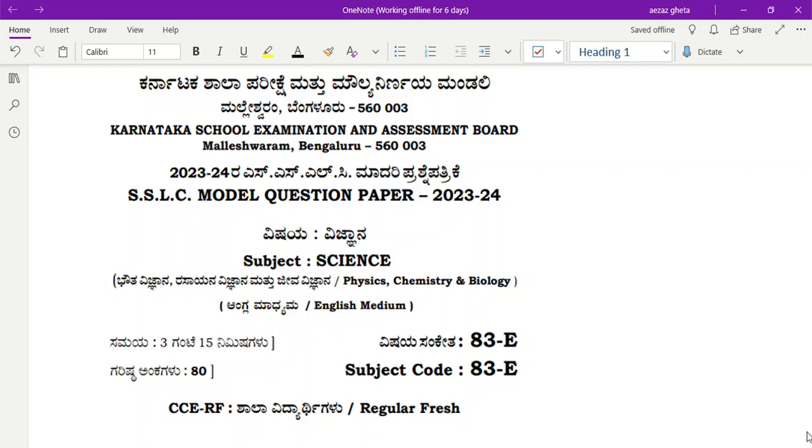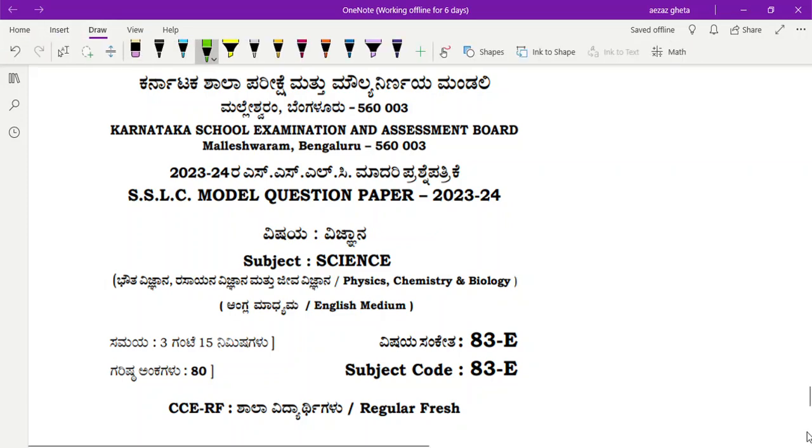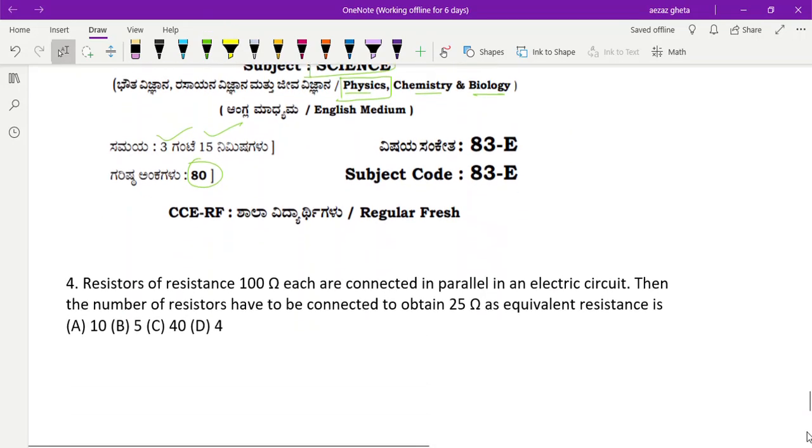Shall we start? You can see on the screen the model paper of science for 2023-2024, this year's model paper released by Karnataka board. Science subject - physics, chemistry, bio - 80 marks, 3 hours 15 minutes. But in this video I'm just going to discuss the numerical part of physics. In our next video we will see four mark questions in chemistry and bio also.